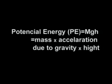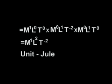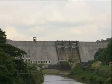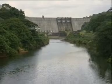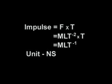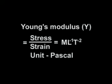Potential energy: PE = mgh = mass × acceleration due to gravity × height = M¹·L·T⁻² × L = M¹·L²·T⁻². Unit: Newton·second. Young's modulus: Y = stress/strain = M·L⁻¹·T⁻². Unit: Pascal.